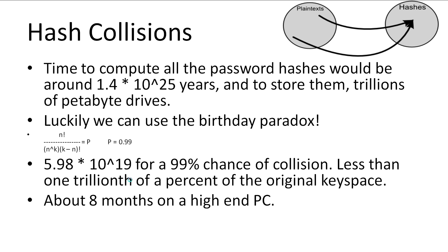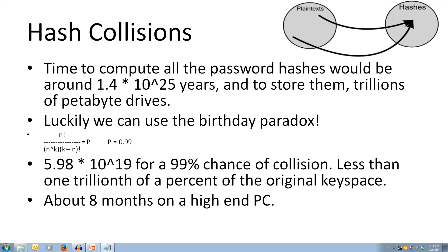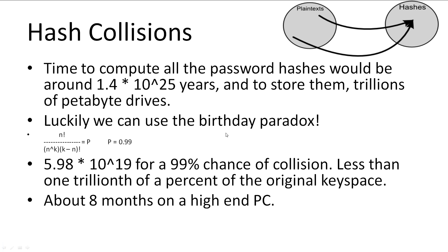Luckily, this is where the birthday paradox is of use. Plugging the total number of hashes and a probability of 99% into our combination equation and solving for k, we get 5.98×10^19 for a 99% chance of a collision occurring. This is less than one trillionth of a percent of the original keyspace.